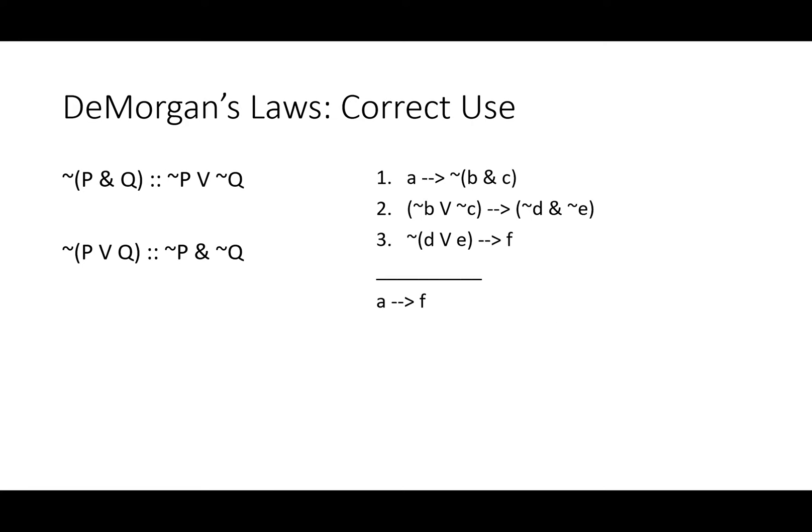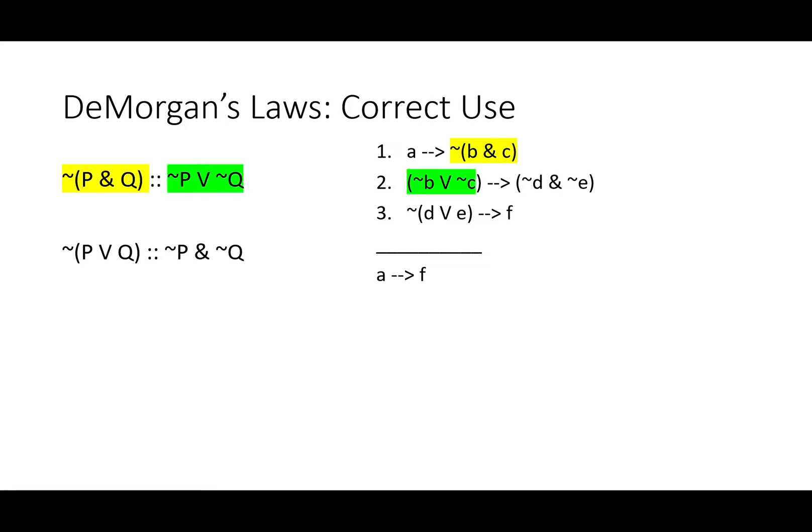How about a slightly more complicated proof? Looking at these arrows, I hope you see that we're going to want some hypothetical syllogisms to go from A to F. I also hope you see that the antecedent of our first conditional, it's not the case that B and C, matches exactly with one of the DeMorgan's forms. And the antecedent of the next conditional, not B or not C, matches the other side of DeMorgan's law. We can use DeMorgan's on either of those lines to make them match and set up our hypothetical syllogism.